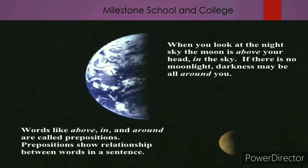When you look at the night sky, the moon is above your head in the sky. If there is no moonlight, darkness may be all around you. Words like 'above,' 'in,' and 'around' are called prepositions. These are examples of preposition. Prepositions show relationship between words in a sentence.